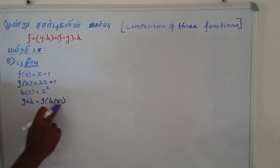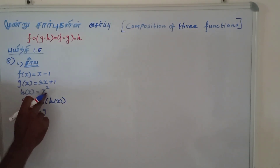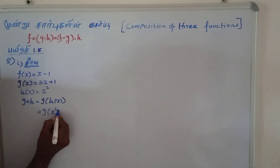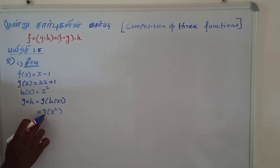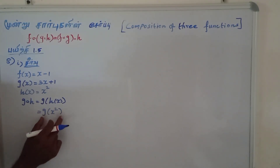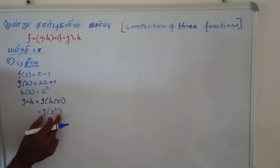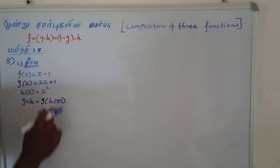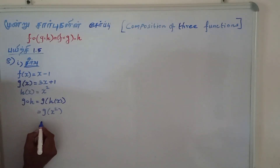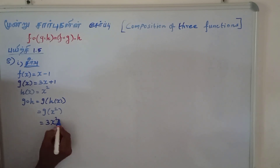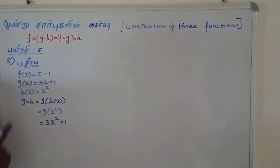So G of H of X: H of X squared, where H of X equals x squared, so x squared is equal to x squared. G of X is equal to x squared. F of x is 3x squared plus 1. G∘H, F, F.